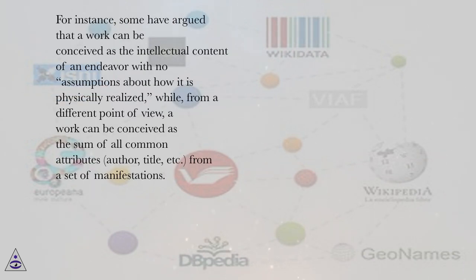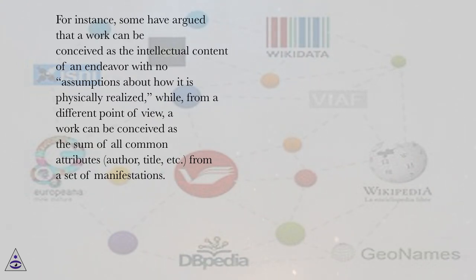For instance, some have argued that a work can be conceived as the intellectual content of an endeavor with no assumptions about how it is physically realized, while, from a different point of view, a work can be conceived as the sum of all common attributes — author, title, etc. — from a set of manifestations.